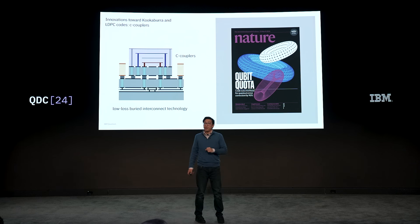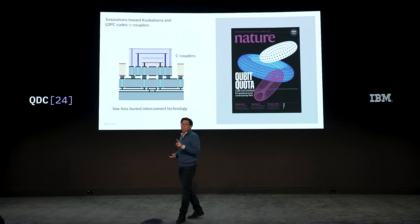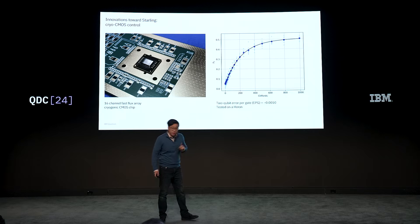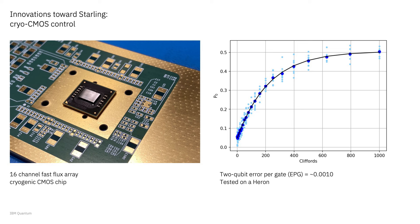We're already thinking all the way out in our roadmap to Starling. We'll need to control qubits at an even higher scale with low gate errors and at low cost. We're excited to show off a new CMOS control that lives inside the dilution refrigerator — actual chips in the fridge controlling actual two-qubit tunable coupler gates down to the 1e-3 level. We're able to scale out a single chip to a parallel set of 16 control lines.